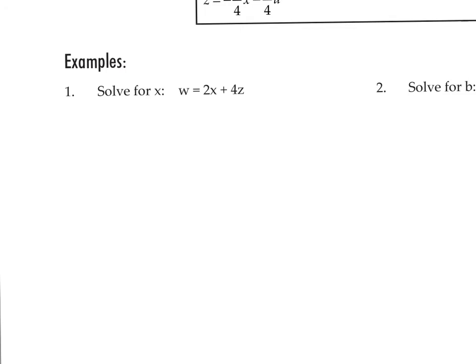Solve for X in W equals 2X plus 4Z. So here's the X in this term. W equals 2X plus 4Z. The X is here. We get rid of the other term first. So this is a positive 4Z.